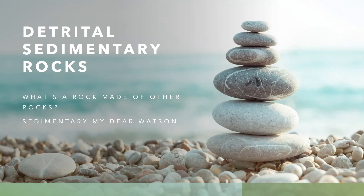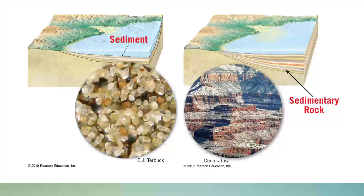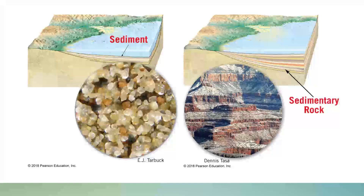Now we enter the world of rocks that can form at the surface of the earth. These rocks are called sedimentary rocks. Sedimentary rocks form over millions of years, and it takes a long time to grind a big rock into smaller pieces and an even longer time for them to form into those big layers of detrital sedimentary rock.